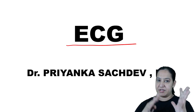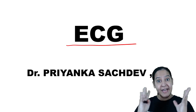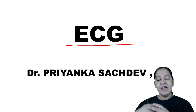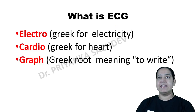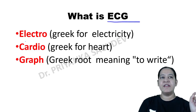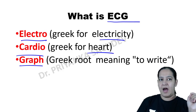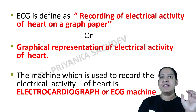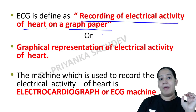I will be telling you about the ECG machine, ECG paper, the electrodes of the ECG, the leads of the ECG, how we do the ECG, and how we interpret the ECG. So first of all, what is ECG? The full form of ECG is electrocardiograph. Electro means electricity, cardio means heart, and graph means to write. So ECG is the recording of electrical activity of the heart on a graph paper.